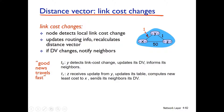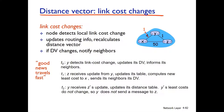Z receives its updated information at time T1, updates its table, and computes the new least cost to X. But the data is added to the path. If a distance vector update is needed, it is transmitted to the same neighbor. Then at time T2, Y receives Z's distance vector, and the other data is added to the path.